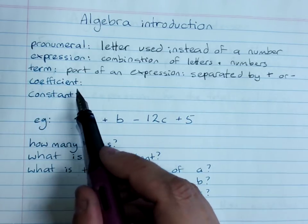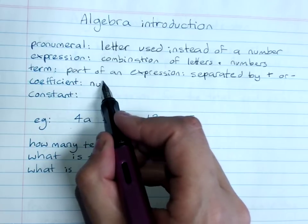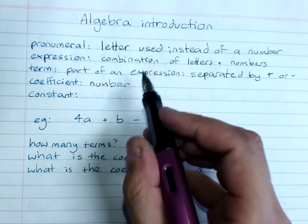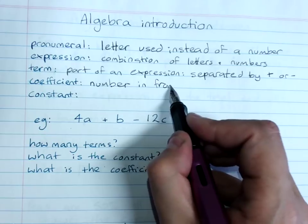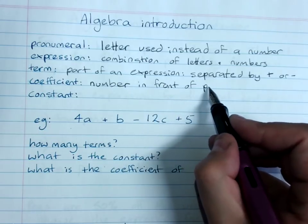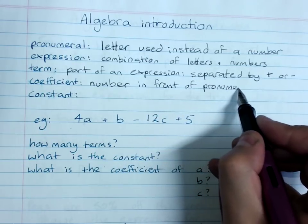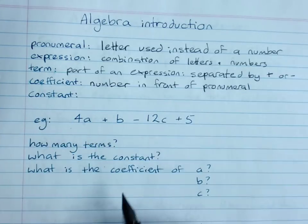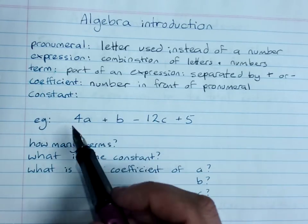A coefficient is a number in front of a letter, and it's multiplied by that pronumeral. So in fact, we'll skip down here.